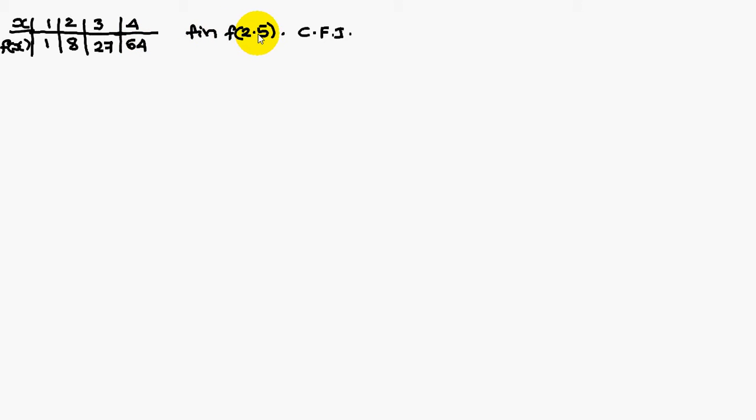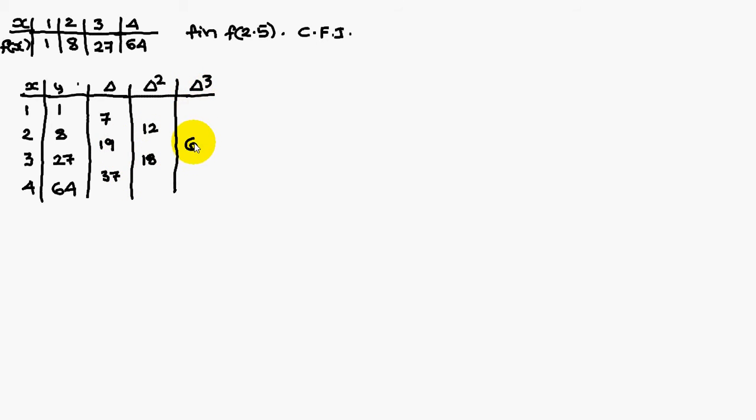Find f of 2.5 using Central Forward Interpolation. So the x and y values I am representing column wise. Next we have to find the first differences: 8 minus 1 is 7, 27 minus 8 is 19, 64 minus 27 is 37. Similarly second differences: 19 minus 7 is 12, and 37 minus 19 is 18. Similarly third difference is 18 minus 12, which is 6.